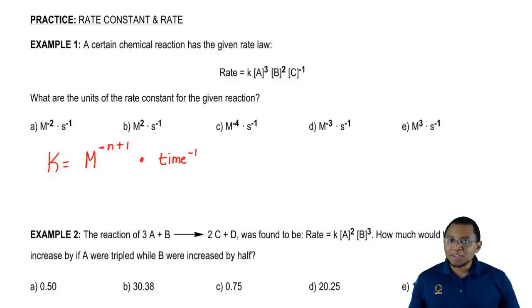Remember, we talked about the variable n earlier. We said n equals the overall order. How did we find out the overall order of a reaction? We just added up all of the reaction orders.